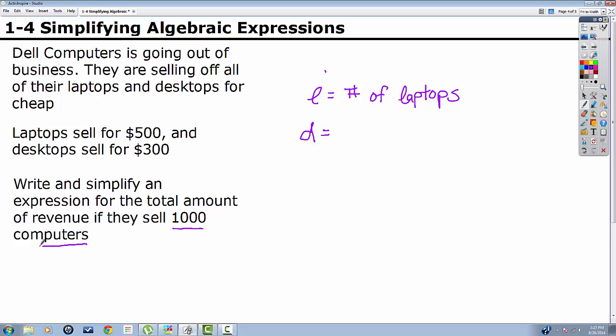So if we identify laptops as our variable, that means that desktops must equal, and this is important right down here, if they sell 1,000 computers, that's total amount of computers, laptops and desktops combined. So if they sell L number of laptops, then they sell 1,000 minus L number of desktops. If I sell 700 laptops, I sell 1,000 minus 700, 300 desktops. That's how we're going to be able to write an equation in a single variable by using this.